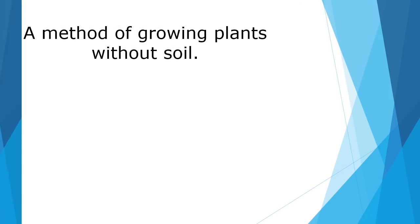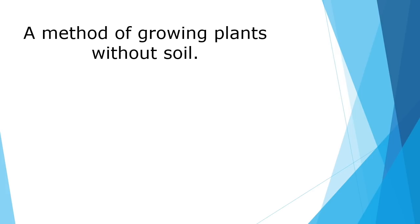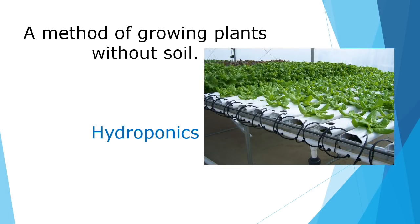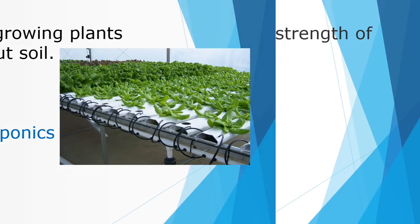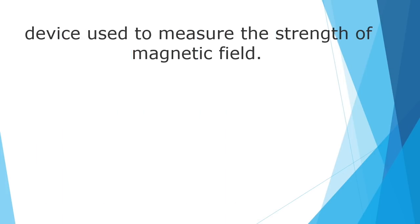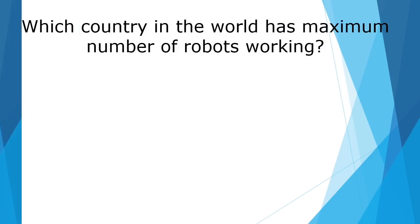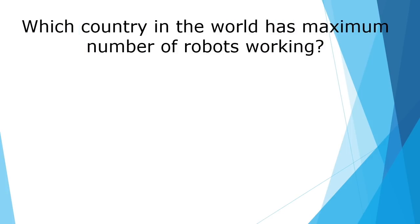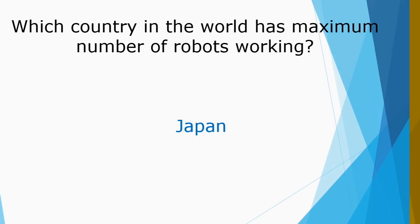A method of growing plants without soil is called hydroponics. Which country in the world has the maximum number of robots working? Japan is the country with the maximum number of robots working.